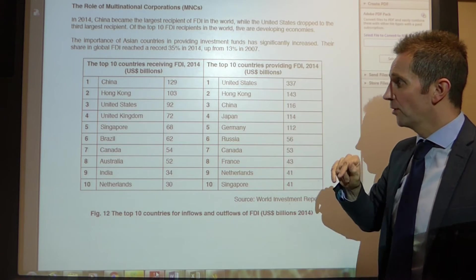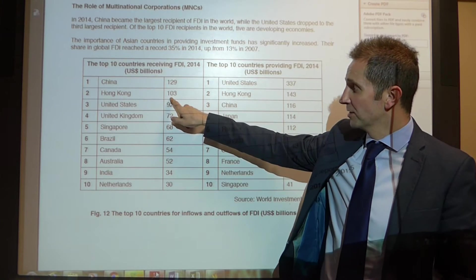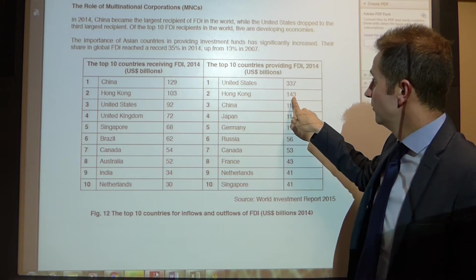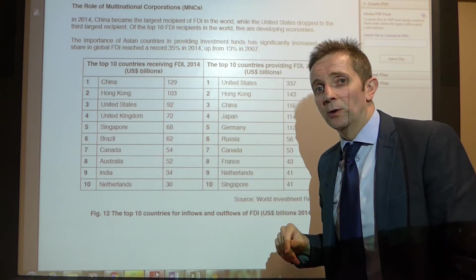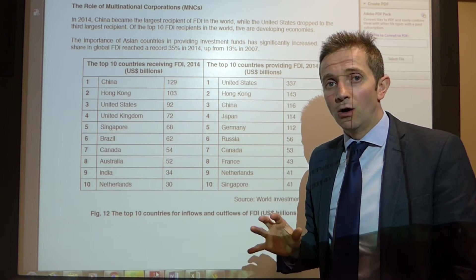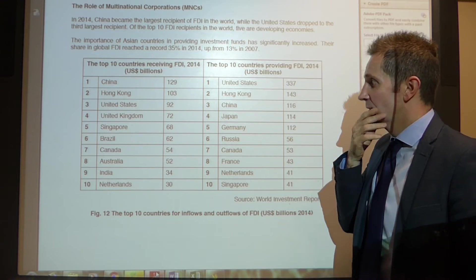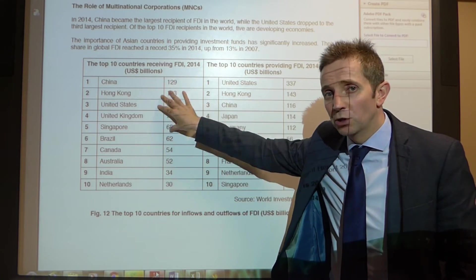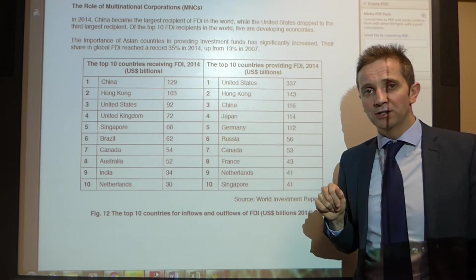Look for others where that isn't the case. Consider Hong Kong: 103 billion US dollars in, 143 billion US dollars out — a net contributor of FDI to the tune of 40 billion US dollars. Do be wary of that and go through each of these countries to calculate what the net flow is for each one.